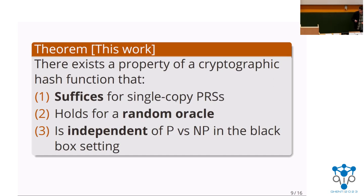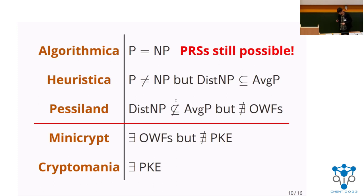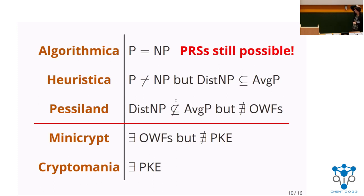To phrase things differently: going back to the first slide, all the way in Algorithmica where P equals NP, in the black box setting it is entirely conceivable that we still have pseudorandom quantum states. For classical cryptography, any interesting cryptography in Algorithmica is unthinkable. What this talk is essentially showing is that the landscape surrounding cryptography, the P versus NP problem, and one-way functions looks very different in the quantum world.